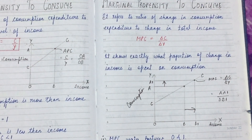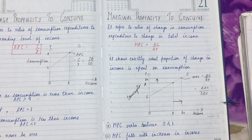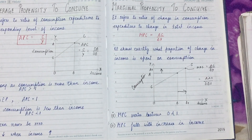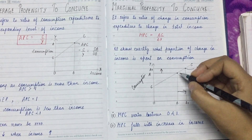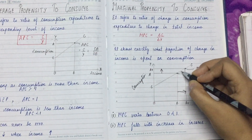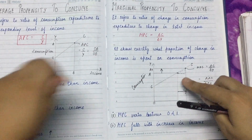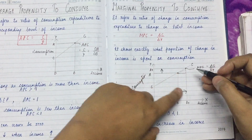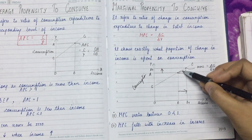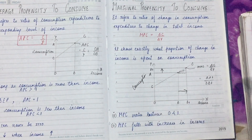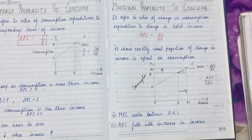This was all about the MPC curve. Now comes an important property of MPC: MPC varies between 0 and 1. It is said that MPC always stays between 0 and 1. Before understanding this, look carefully at the curve — the portion representing changed income is from one point to another, showing how income shifted and how consumption shifted correspondingly.